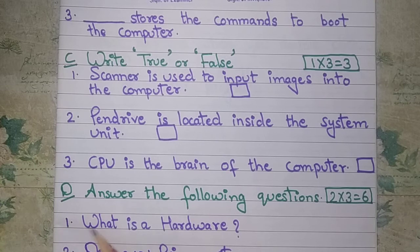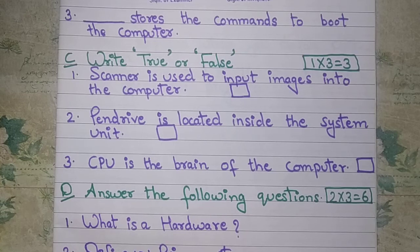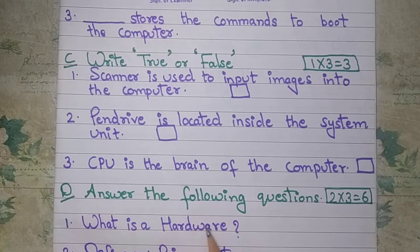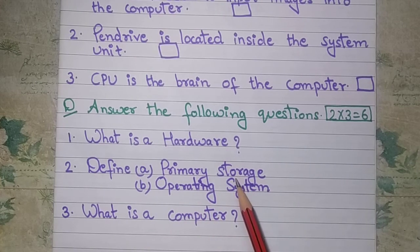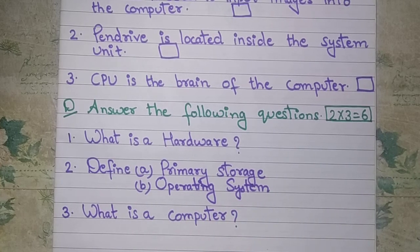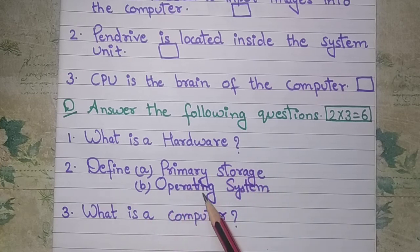Now we move on to section D: 'Answer the Following Questions.' It is of two marks and there are three questions. First: What is hardware? Write with examples. Second: Define primary storage — what is primary storage? Third: Define operating system — what is an operating system? Write the definitions accordingly.